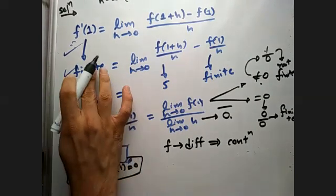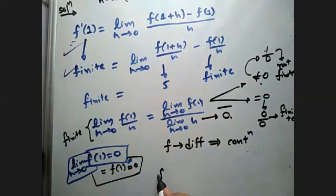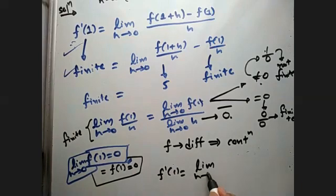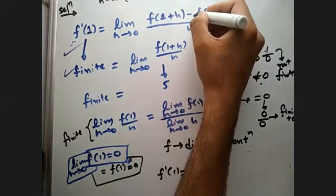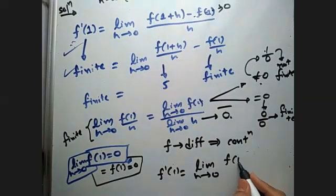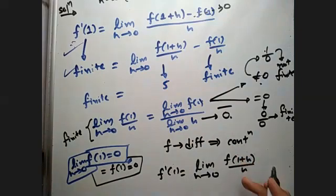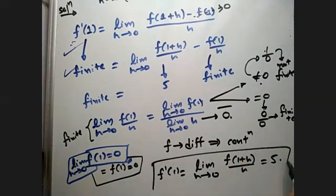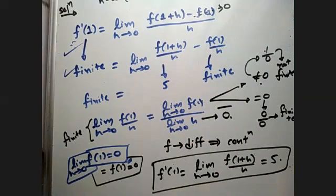Now you go back to f dash 1, which we have to find. So f dash 1 will be equal to now limit h tends to 0, f of 1 is 0, so this value becomes 0. So what remains is f of 1 plus h by h. This will be your f dash 1. Is it clear now?